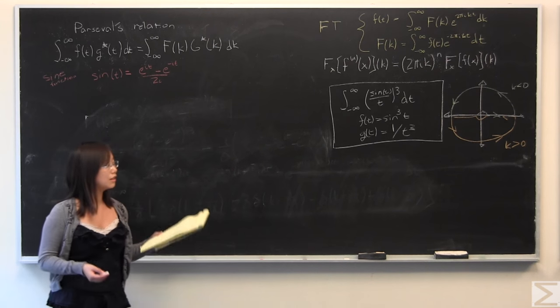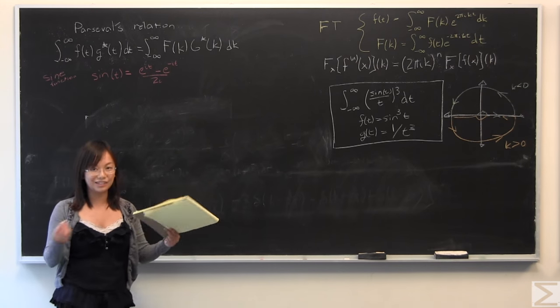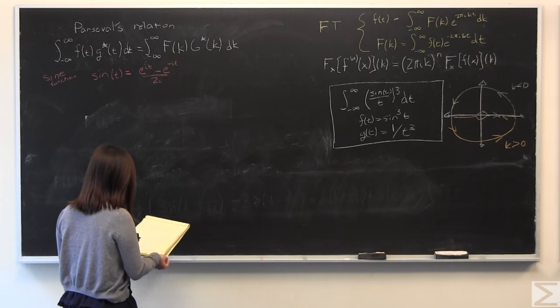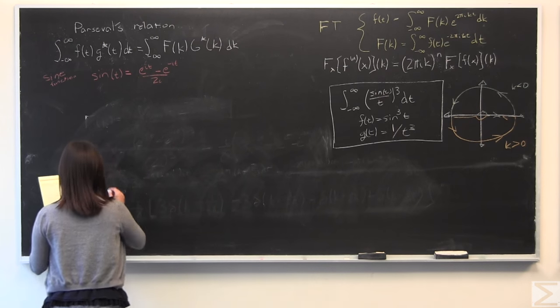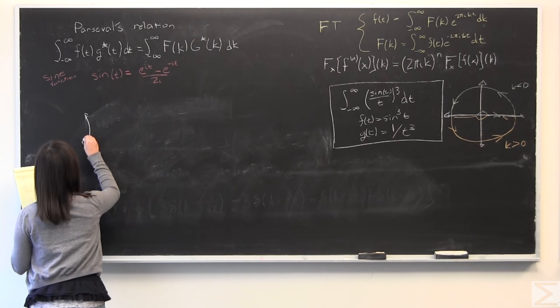So I'm only going to look at 1 over t, the Fourier transform of that. I'm going to use that property, and you're going to get a really cool answer.